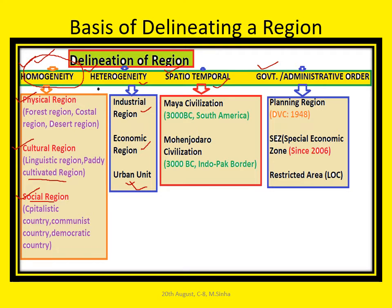The fourth basis is the planning region, which solely depends on administrative decision for future planning by the government. Devishi is an example — proposed by the Government of India in 1948 just after independence. In 2006, the Government of India proposed a scheme called Special Economic Zone instead of planning region. Government can also delineate any area as a restricted area for defense or security purposes.